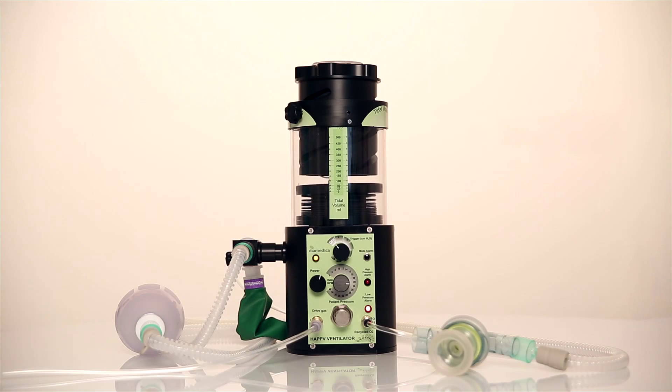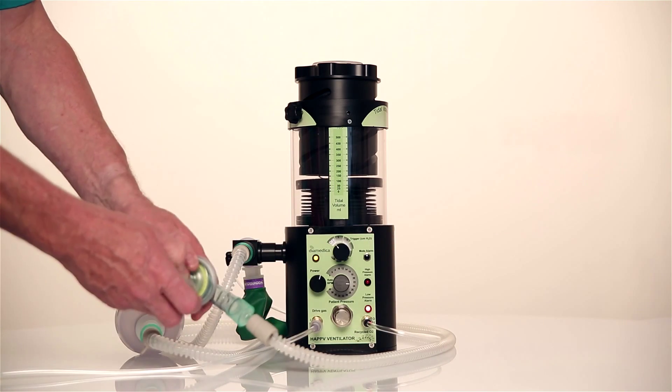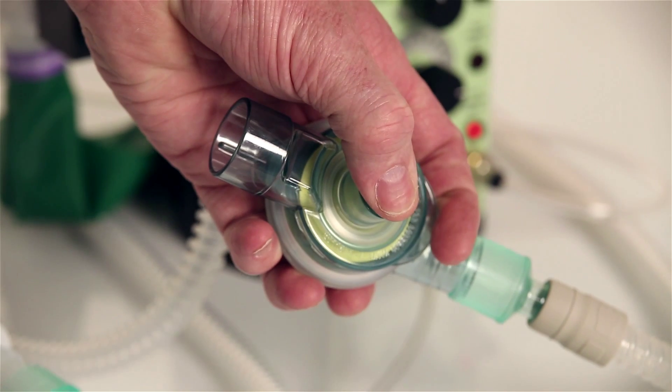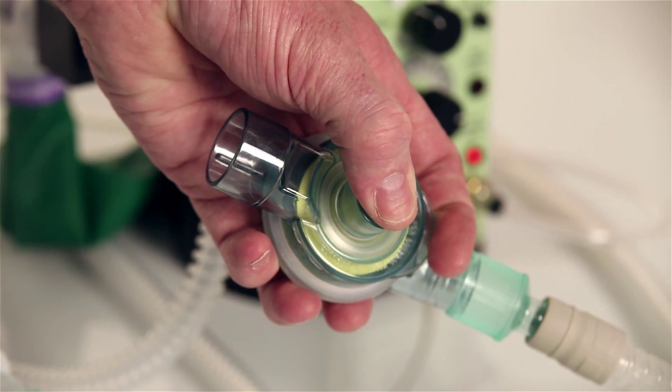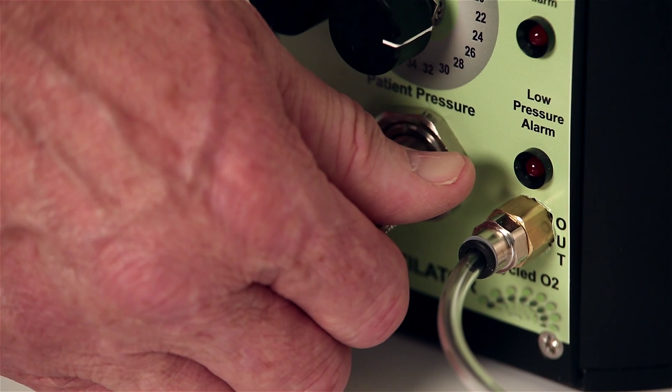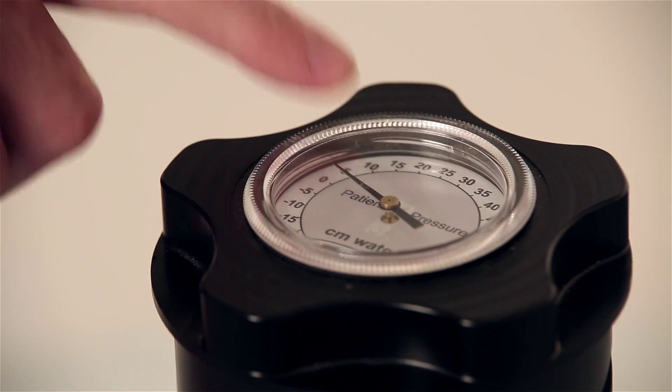To set the initial patient pressure, run the ventilator while occluding the patient valve outlet. Adjust the pressure control until the desired pressure on the gauge is shown.